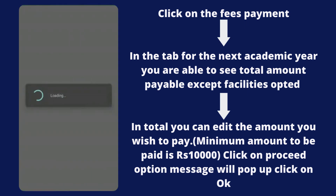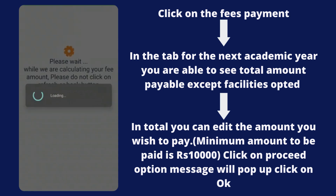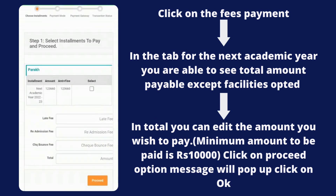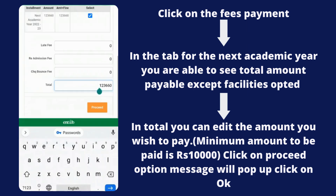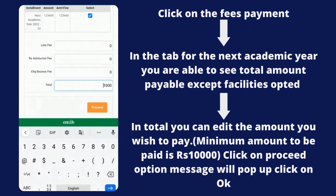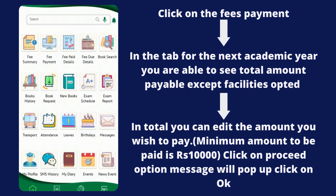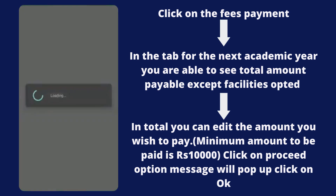Click on the Fee Payment tab when you want to pay. In this tab you will see the next academic year and the total amount you want to pay. In the last column you can edit the amount, but the minimum amount to be paid should be ten thousand. You can then proceed for payment.